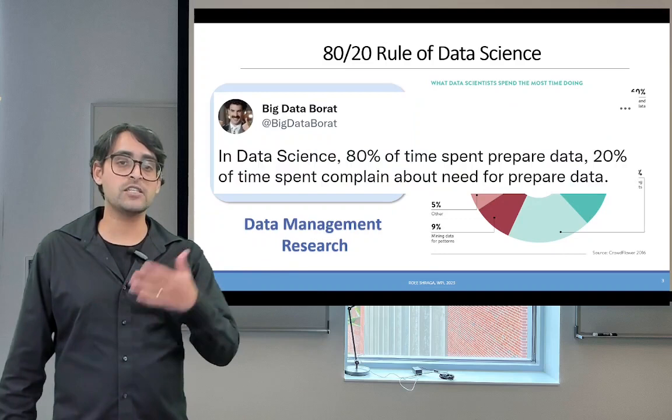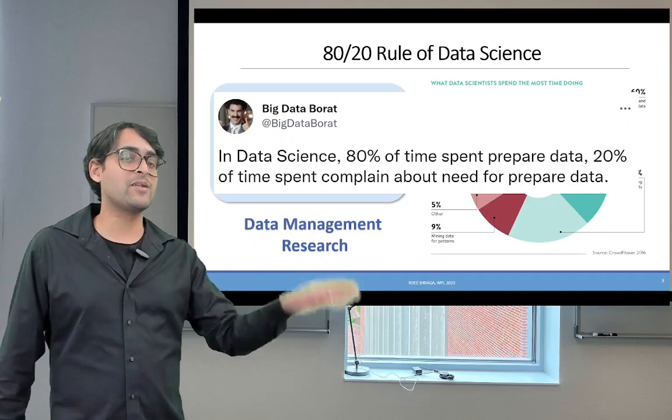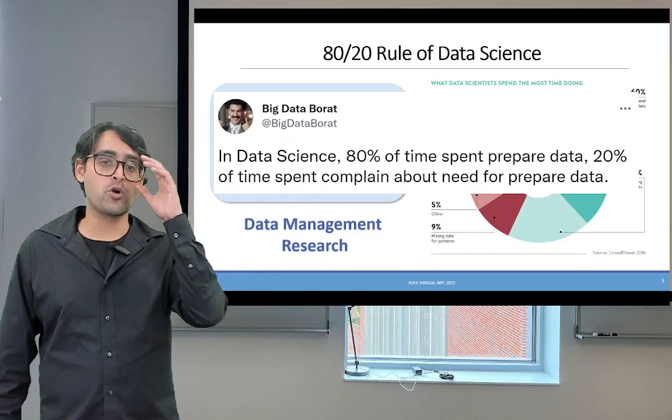There are additional alternative takes to the 80-20% rule. For example, Big Data Borat, which is a common Twitter account, talks about this rule as 80% of time spent on preparing the data, and 20% of time spent complaining about needing to prepare the data. For those of you who worked with data before, and will work with data in the future, you can definitely relate to this alternative rule.